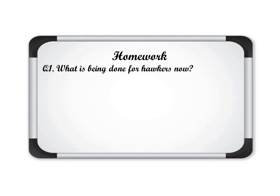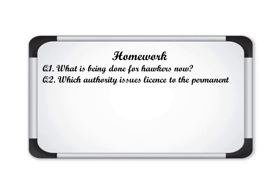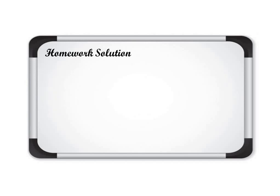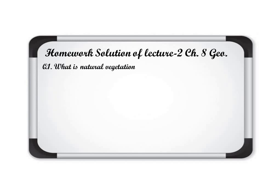Now it's time for homework. Question 1: What is being done for hawkers? Question 2: Which authority issues a license to permanent shops to do business? Question 3: What are the differences between those who sell on the street and those in the market? Write all these answers in your fair register. Some more topics — work in factories and offices — will be taken in the next lecture.